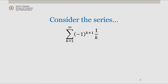Consider the series from k equals 1 to infinity of negative 1 to the k plus 1 times 1 over k. This series is known as the alternating harmonic series, and recall that the harmonic series diverges, which we proved using the integral test. Now, a sub k is equal to 1 over k.